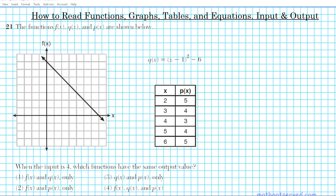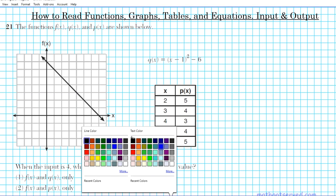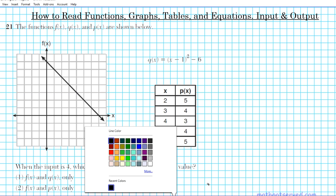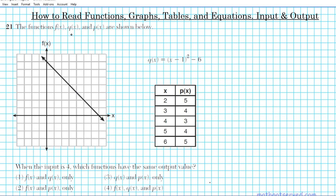Alright let's take a look at question number 21. Question 21 reads: the functions f(x), q(x) and p(x) are shown below. So this is f(x) the graph, q(x) the equation, and p(x) the table.